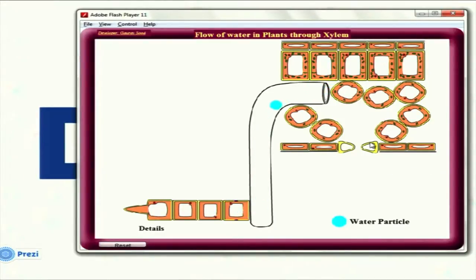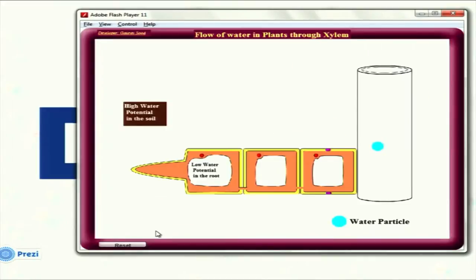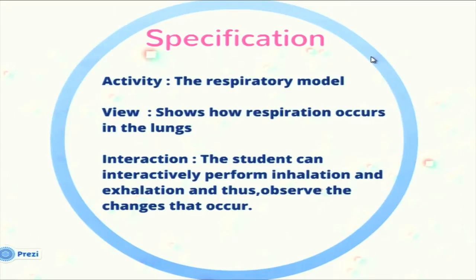The activity passes water through various parts of the plant, and hovering over every part shows what that part is. There is also a detailed view of what happens — the water particle enters through the root tip and moves to the xylem. The second demo is something we do every day: we all breathe. This shows how respiration occurs in our body — the respiratory model is actually an experimental setup.